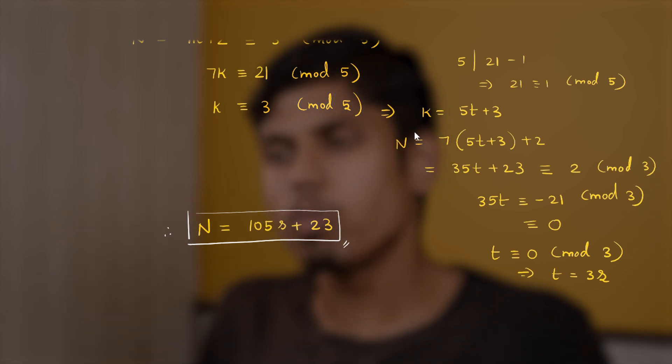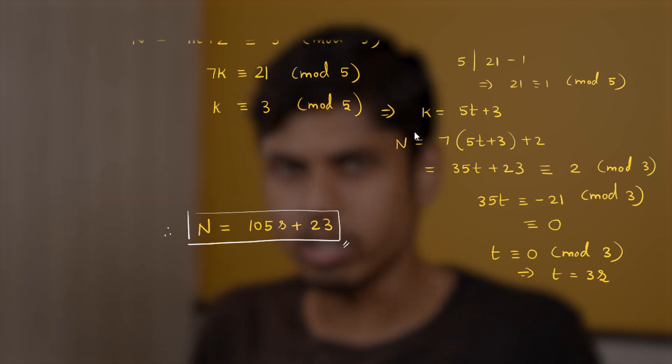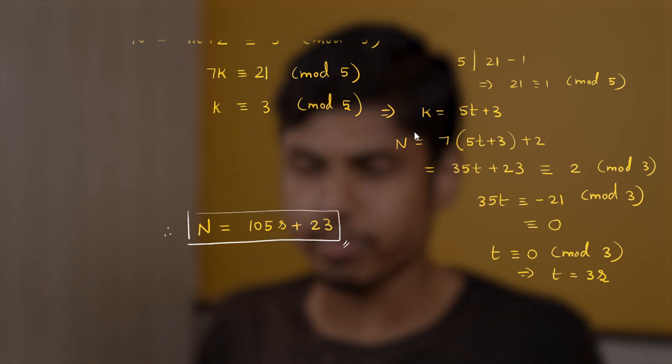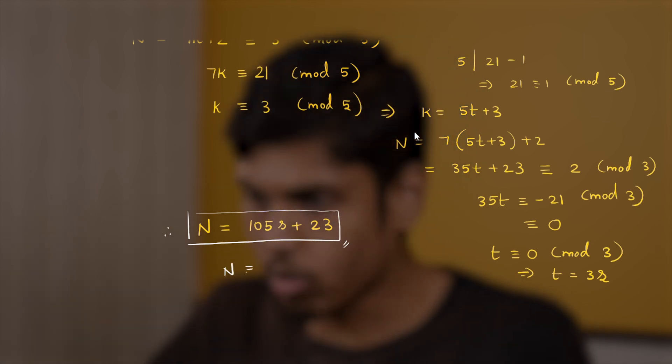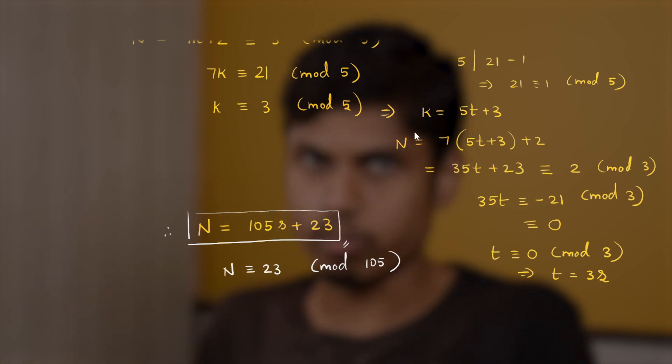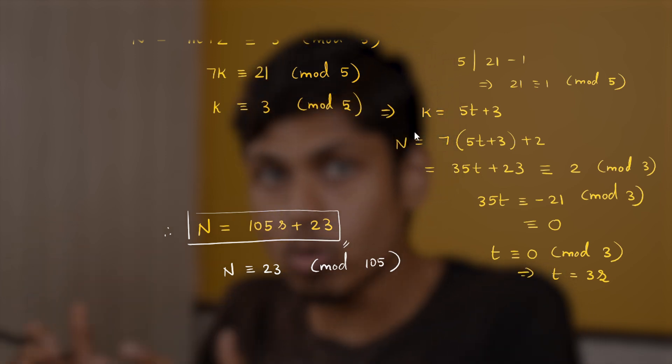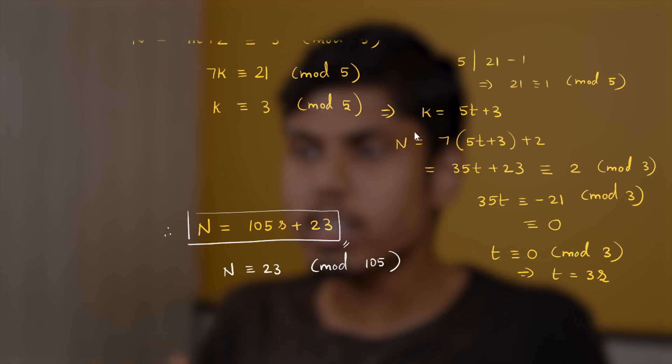But what does Chinese remainder theorem do here? It just says that this is the solution. And there are no other solution modulo 105. That is n congruent to 23 modulo 105 is the only solution modulo 105. Again do notice that 23 is not the only solution. It's the only solution modulo 105. So one can also reach the conclusion through congruences. So you should not think that CRT is not used here.